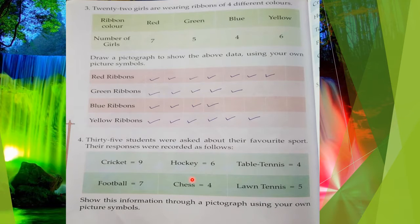How many students' favorite game is lawn tennis? Five. So this record is based on data or numerical figures. The next thing is: show this information through a pictograph using your own picture symbols — you have to maintain this record in a pictograph way.